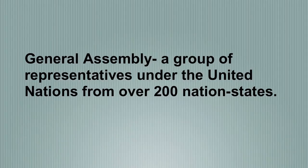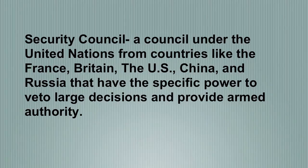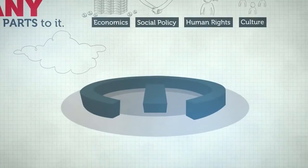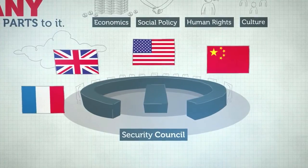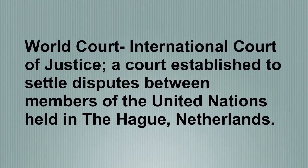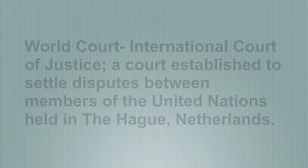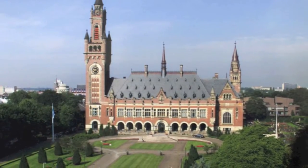Within the UN and its General Assembly is a Security Council, which is a council under the United Nations from countries like France, Britain, the U.S., China, and Russia, that have the specific power to veto large decisions and provide armed authority. The UN develops treaties held in a world stage called the International Court of Justice, or the World Court, which is located in The Hague, Netherlands.